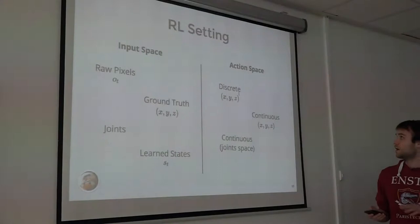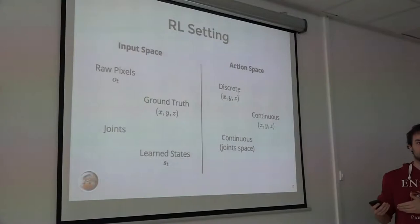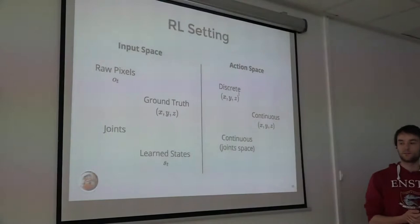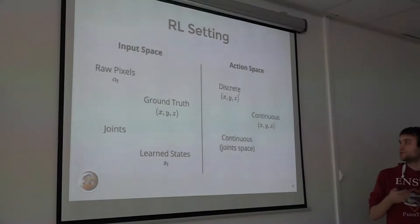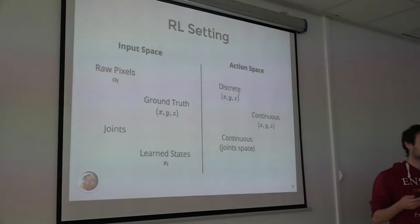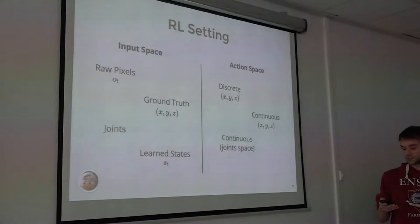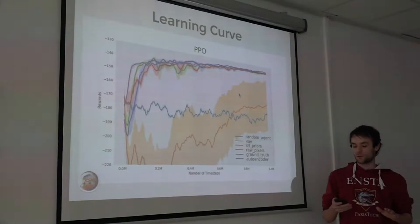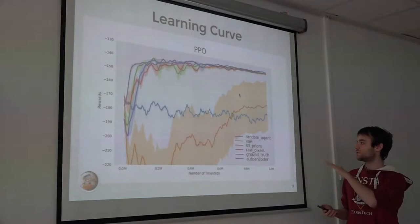We are experimenting with different inputs: raw pixels directly, ground truth in XYZ space, and also learned states. For the action space, we tried discrete actions in XYZ space, continuous actions in that space, and continuous actions in the joint space, keeping whichever works best for our task. This comparison is for the KUKA arm using discrete actions, comparing different state representation learning approaches.